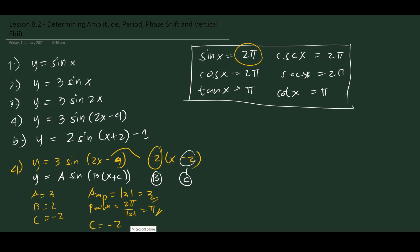As discussed in a previous video, subtracting a value inside produces a rightward shift. So this is a horizontal shift 2 units to the right. If C were positive 2 instead, we would get a horizontal shift 2 units to the left.